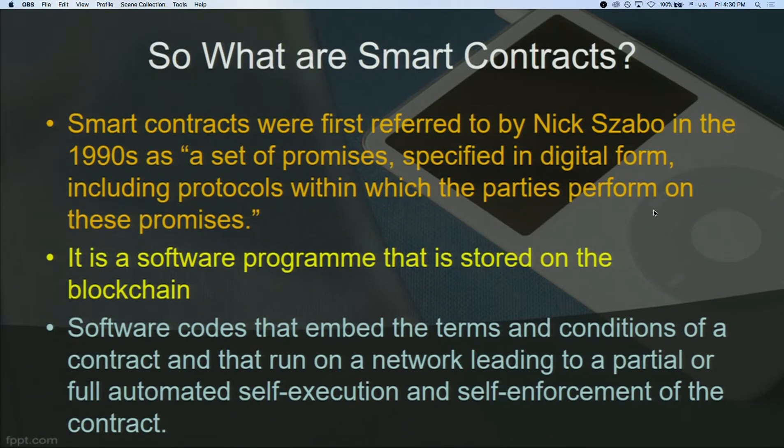A smart contract is a software program stored on the blockchain. Instead of having each transaction individually requested, it processes everything embedded in the software. These software codes embed the terms and conditions of a contract — a normal agreement between two or more parties — and these codes run on a network leading to a partial or full automated self-execution and self-enforcement of the contract. For lawyers, this has created quite a revolution.